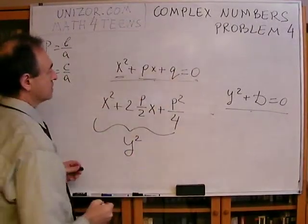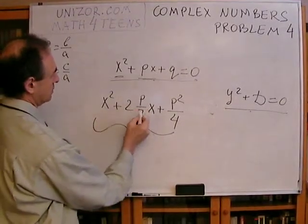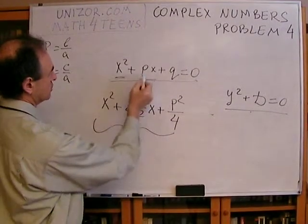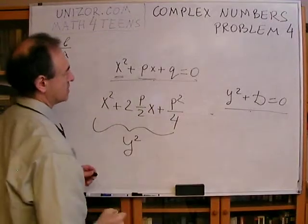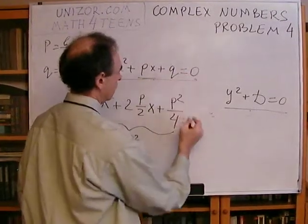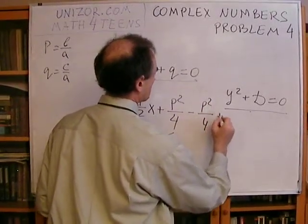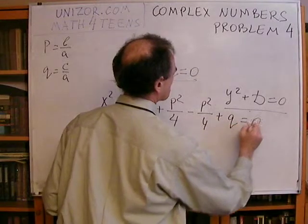Now, to get back to this equation, so X is the same, P times 2 divided by 2 is the same, and only this member is actually not the same. So, to bring it to the following, I have to subtract P squared over 4, and then add Q, and that's equal to zero.